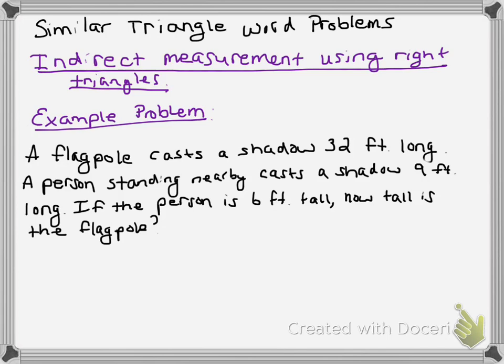It's called indirect measurement using right triangles. You use something that you can measure really easily, something you can reach, something you can use a tape measure for, and then you use a similar triangle to measure something that isn't so easy to reach. In the case of this problem, it's a flagpole.